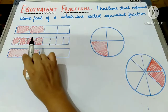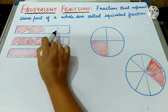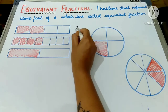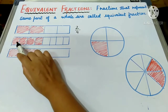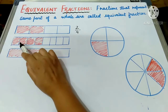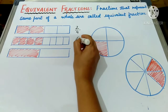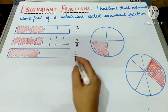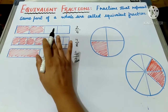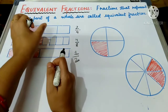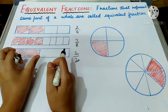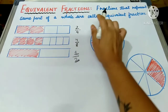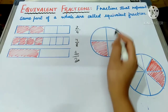Here as you can see, there is a strip divided into four parts and two parts are shaded. So the fraction will be two upon four. Now here there are total eight parts and four parts are shaded, so the fraction will be four upon eight. And here only one part is shaded and there are total two parts, so the fraction will be one upon two. You can see that the same length of the strip is shaded whether the strip is divided into four parts, eight parts, or two parts. These fractions which represent the same part of a whole are called equivalent fractions.